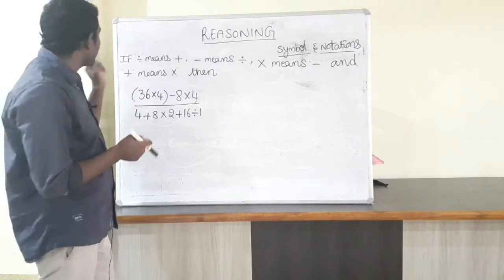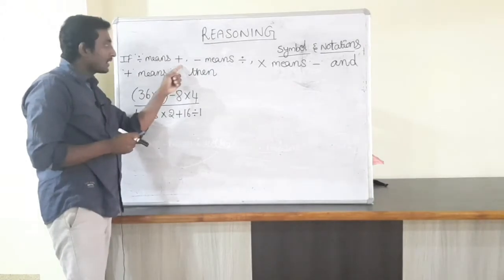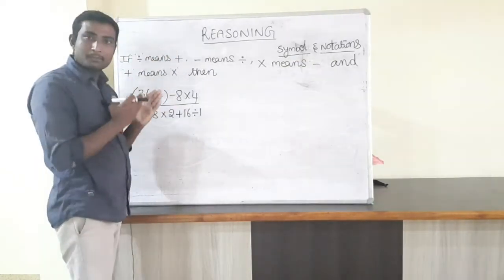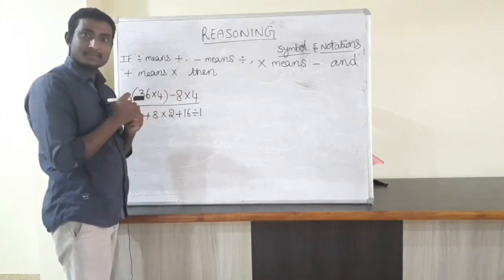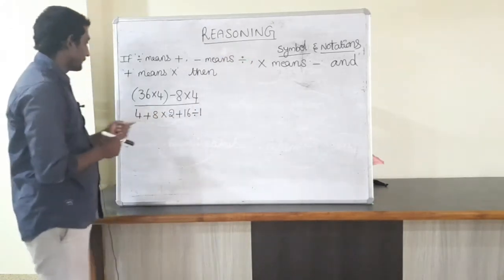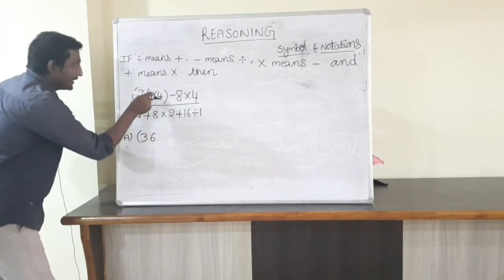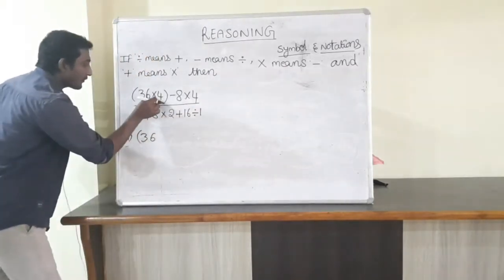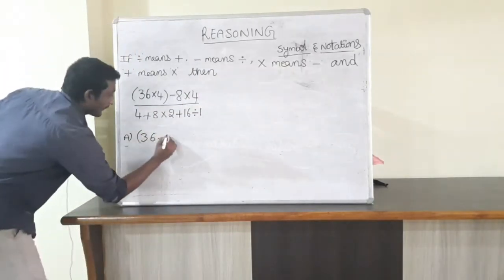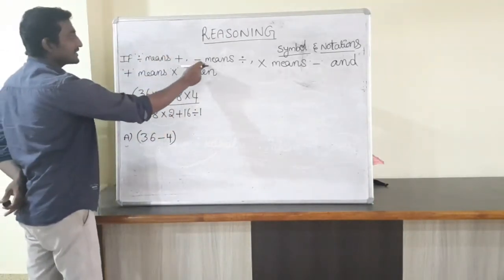What is the meaning of this question? In the place of divided by, replace it with plus. Minus means divided by, so replace minus with divided by. Into means minus, so replace into with minus. Plus means into, so replace plus with into. Now rewrite the expression with the substituted symbols.